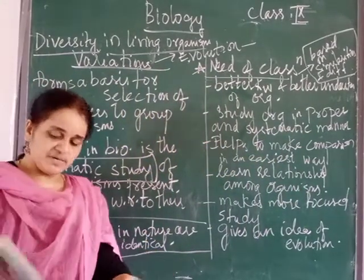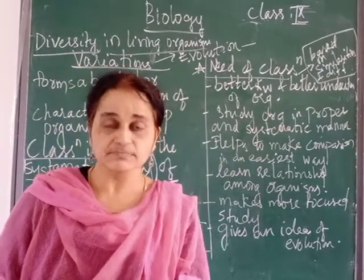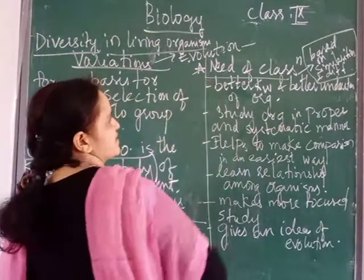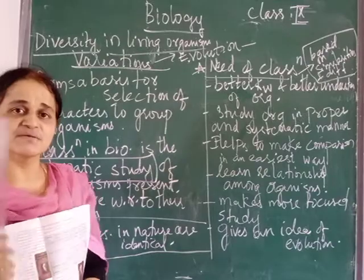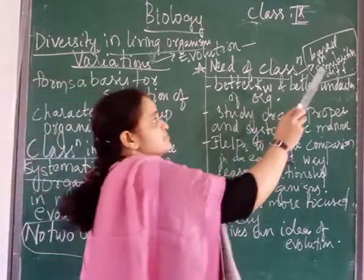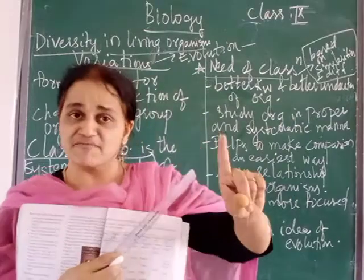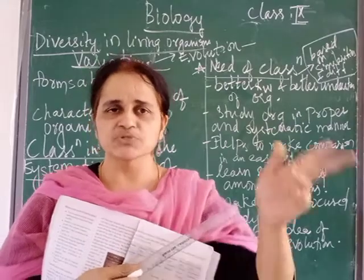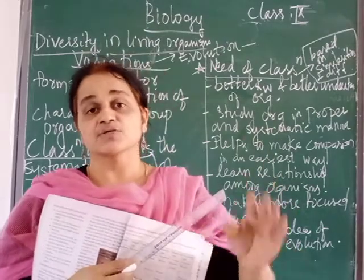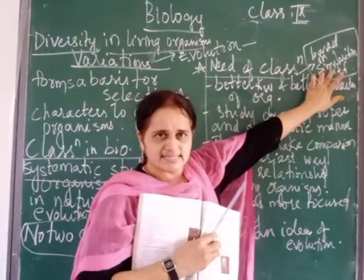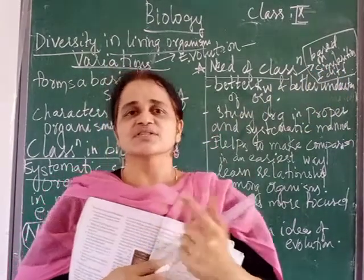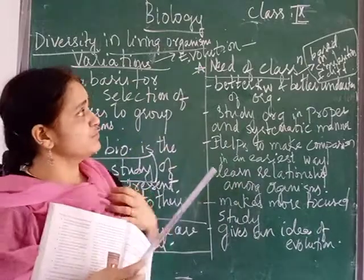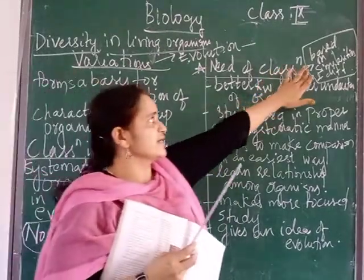Now we will go to page number 56. If you go to page number 56, the need of classification is given. Classification is based on two things: one is similarities — whether they have the same venation, like parallel venation or reticulate venation, and root system, whether it is tap root, fibrous, or adventitious — and the other is differences. So classification is always based on two important things: similarities and differences.